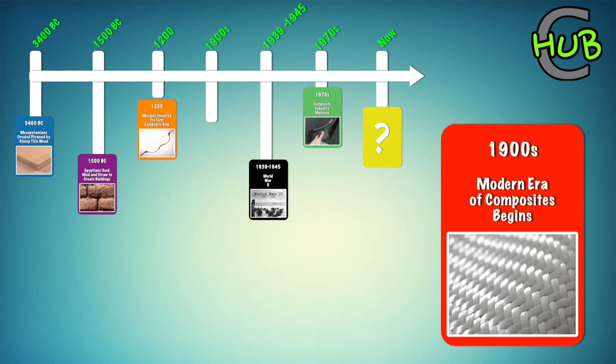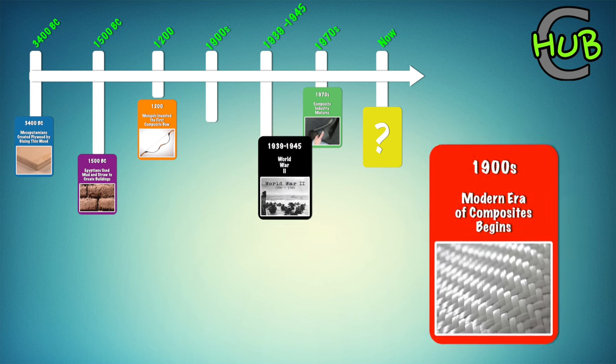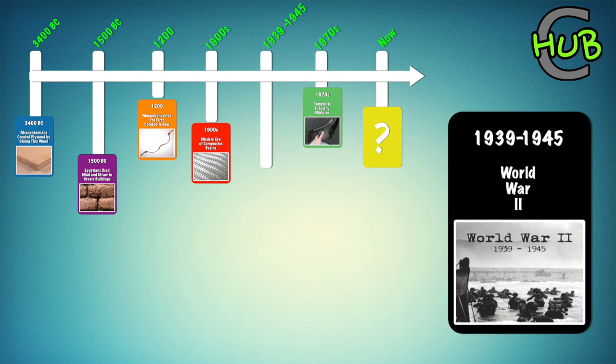The modern era of composites began in the 1900s, when scientists invented plastics and glass fiber. Glass fiber, when combined with a plastic matrix, creates an incredibly strong and lightweight material. Unfortunately, many of the great advancements in composites were as a result of war, as alternative materials were required for lightweight applications in military aircraft.